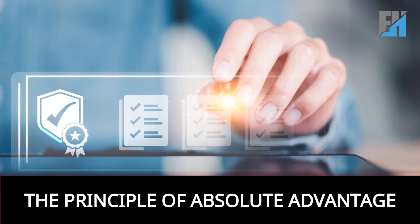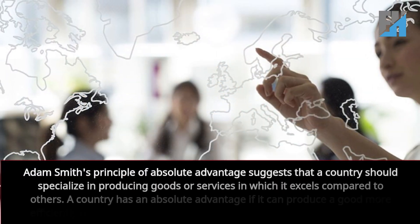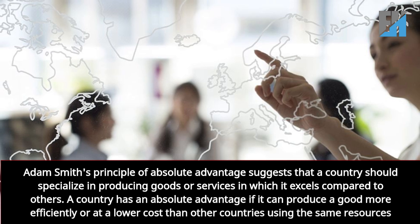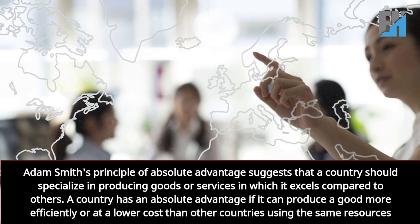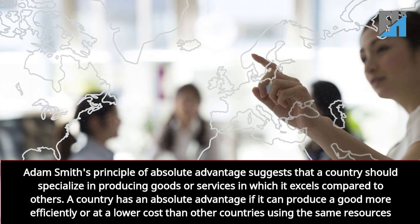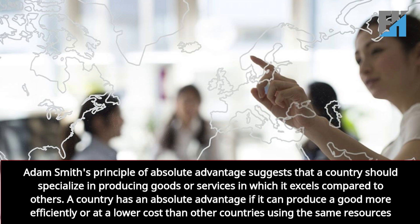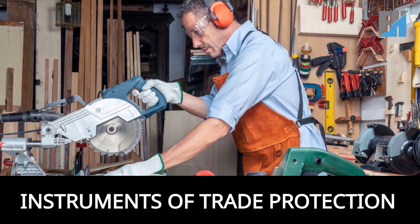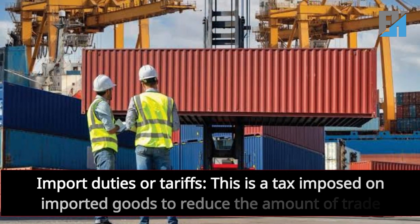The principle of absolute advantage: Adam Smith's principle of absolute advantage suggests that a country should specialize in producing goods or services in which it excels compared to others. A country has an absolute advantage if it can produce a good more efficiently or at a lower cost than other countries using the same resources.